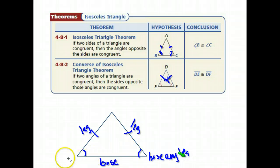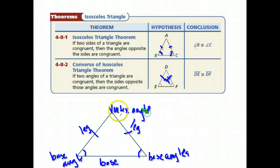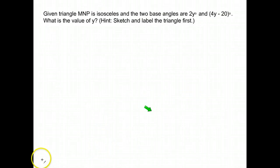This last angle up here, where the legs come together, is called the vertex angle. That's to help when they use this terminology. Given that triangle MNP is isosceles and the two base angles are 2y and 4y minus 20—now they don't tell me which one is the vertex angle.